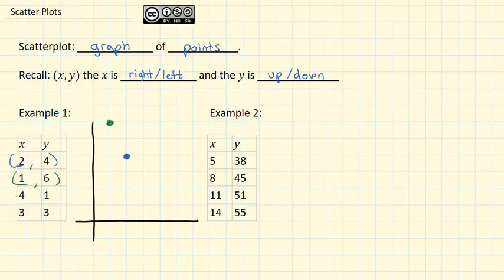The third point is 4 comma 1. So we'll go 4 to the right and up 1. The final point on here is 3 comma 3. So I will go 3 to the right and 3 up. And we end up with the scatter plot of points.